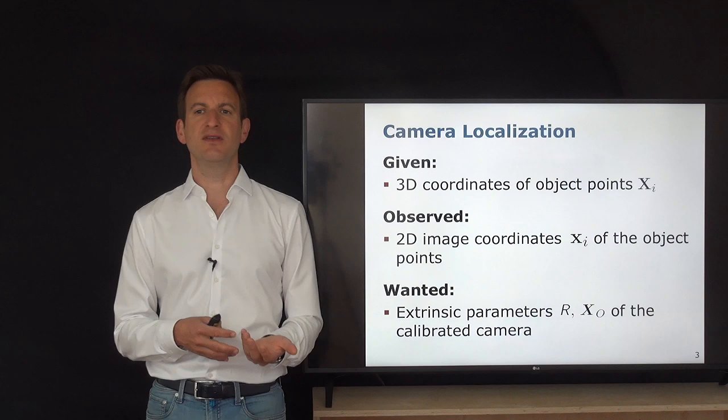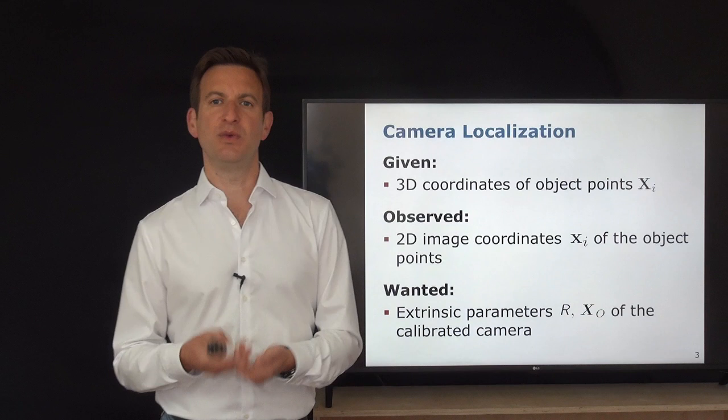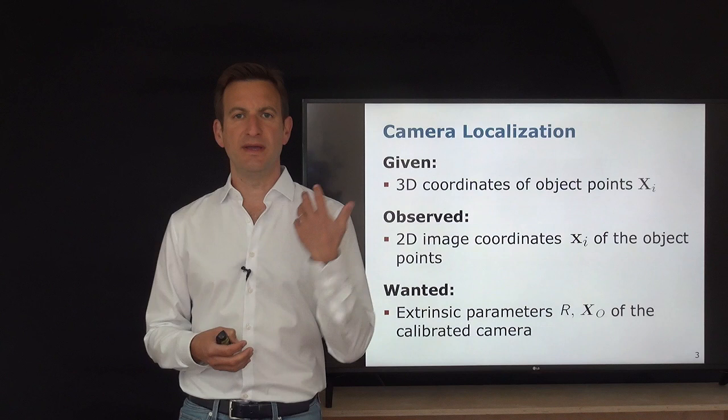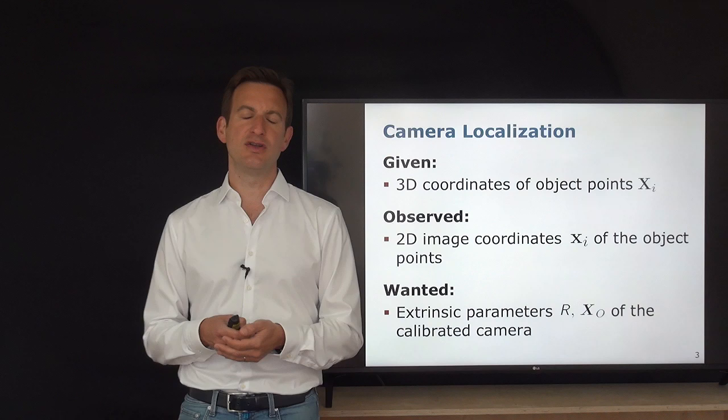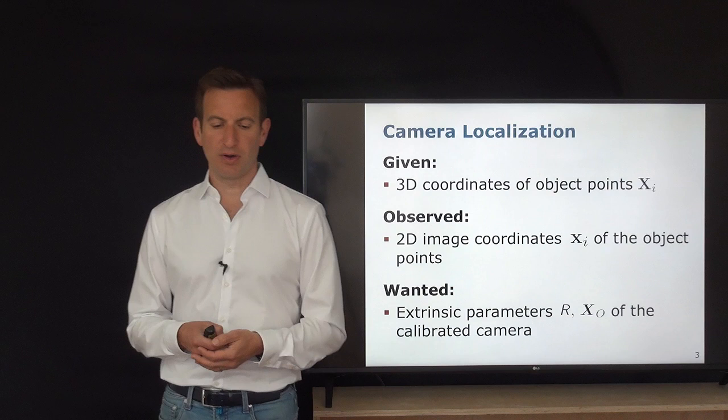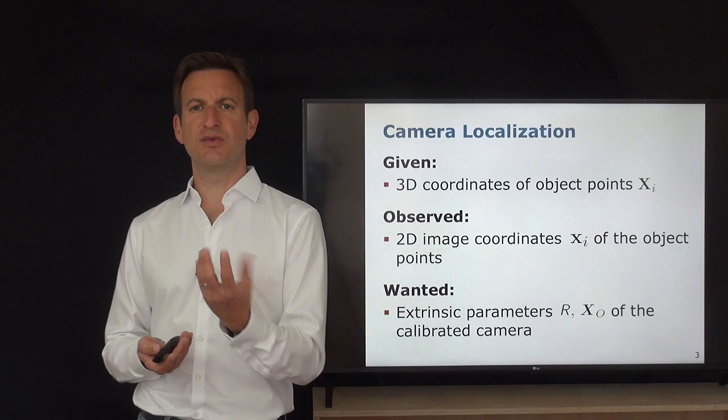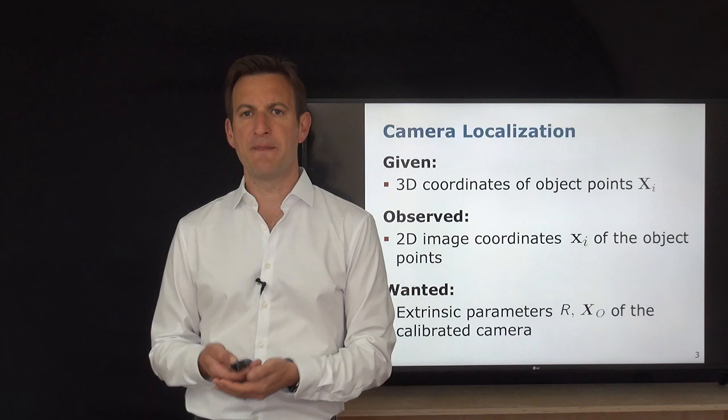Because we know K, we have fewer parameters to estimate, making this an easier task requiring fewer control points. For the projective three-point algorithm, three points are sufficient — four if you have no initial guess at all, due to some ambiguity in the solution. We need to recall how a 3D point maps to the 2D image.